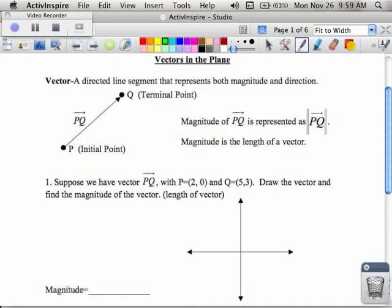They talk about something called an initial point and something called a terminal point. Whenever they name a vector, you have to name it starting with the initial point. So vector PQ starts with the letter P because that's its initial point. On the exam coming up on Thursday, if you name it the wrong way, it's wrong. The vector starts at point P, ends at point Q. You have to name it PQ. Very important.